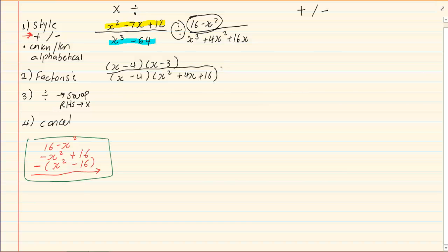Then we are going to multiply. When we multiply, we are going to swap the one on the right hand side of the division. On top, we are going to have x cubed plus 4x squared plus 16x all over. Remember, we have changed 16 minus x squared into negative, open brackets, x squared minus 16.